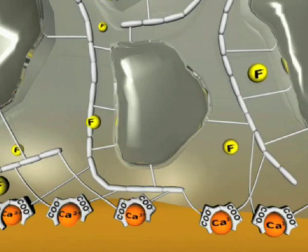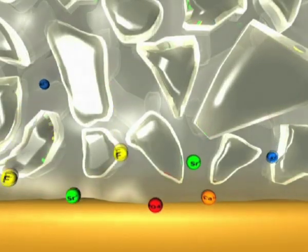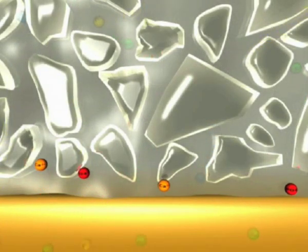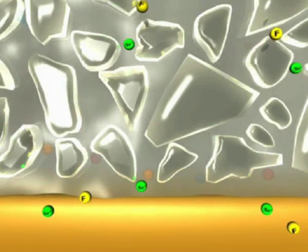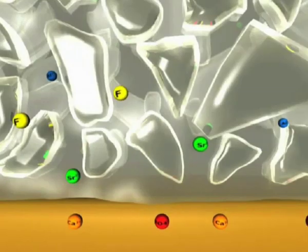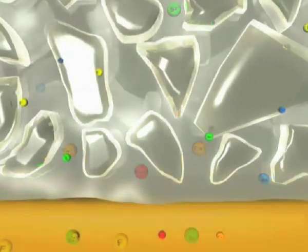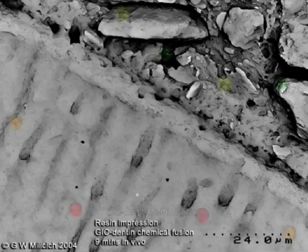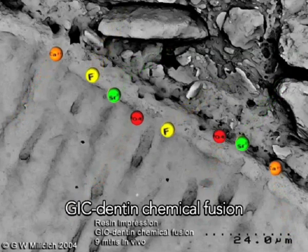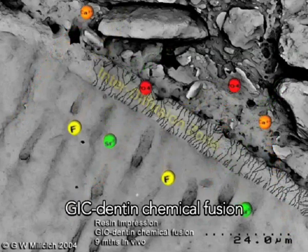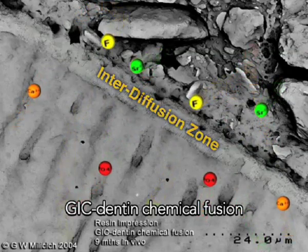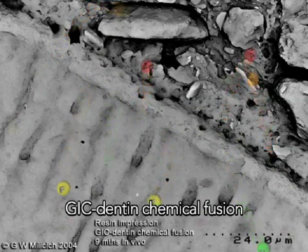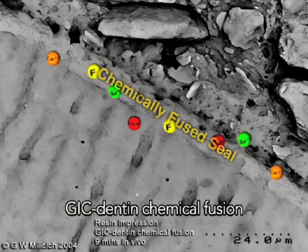In addition to chemical adhesion to calcium in the tooth, a fusion bonding process takes place as well. Calcium and phosphate ions from the polyacid-treated dentin and enamel, and strontium and fluoride ions from the unset glass ionomer, intermix and precipitate, forming an interface called the interdiffusion zone. This zone is stronger and more acid-resistant than either the glass ionomer or the tooth. The combination of the interdiffusion zone and the chemical bonding provides the basis for a strong, stable adhesive interface and creates a bacteria-proof seal for the cavity, best described as a chemically fused seal.